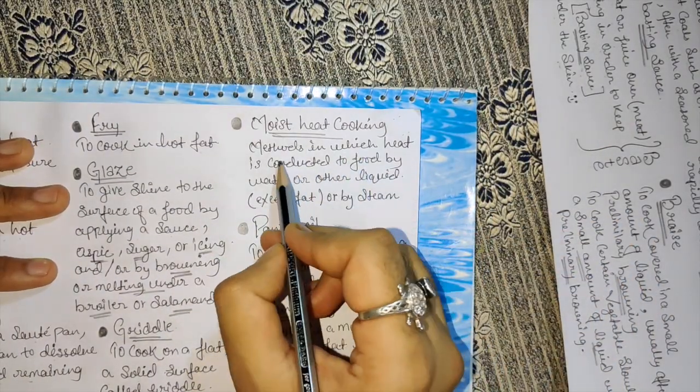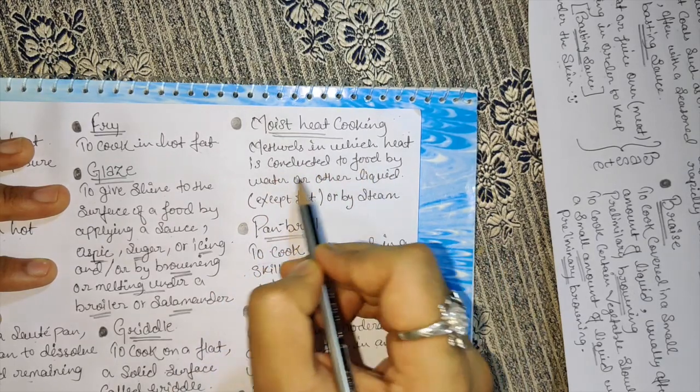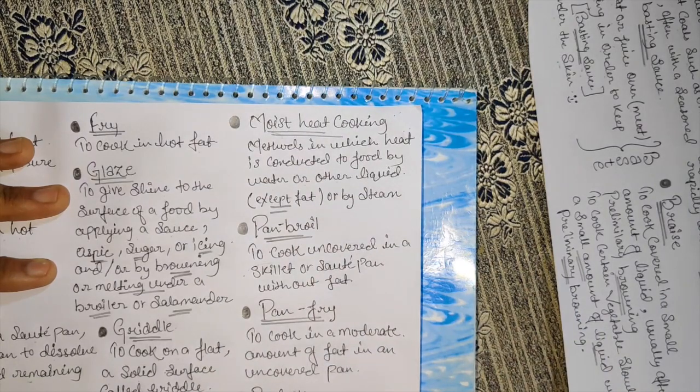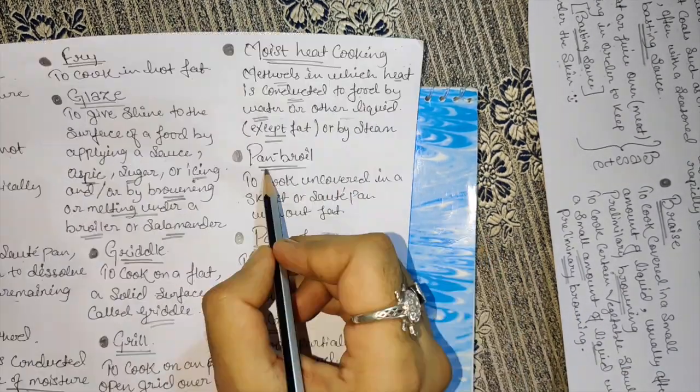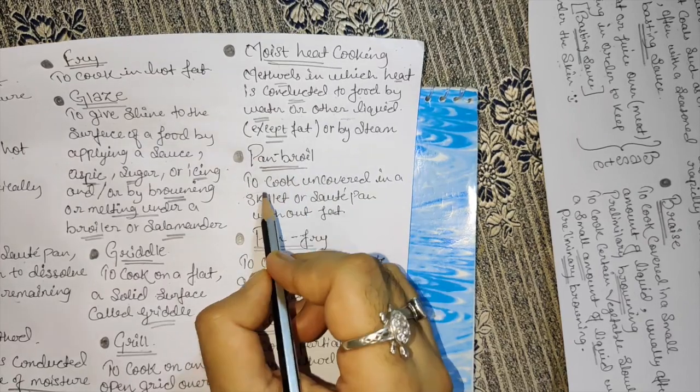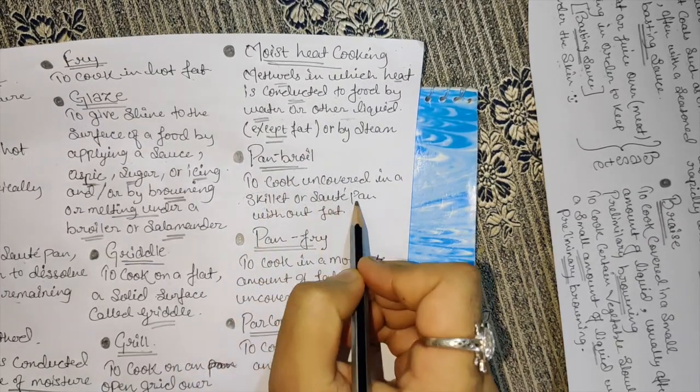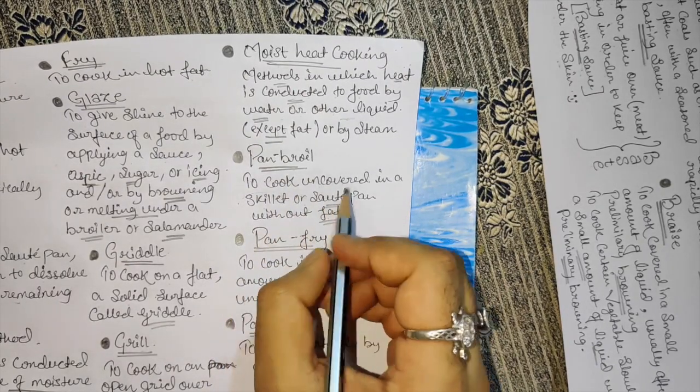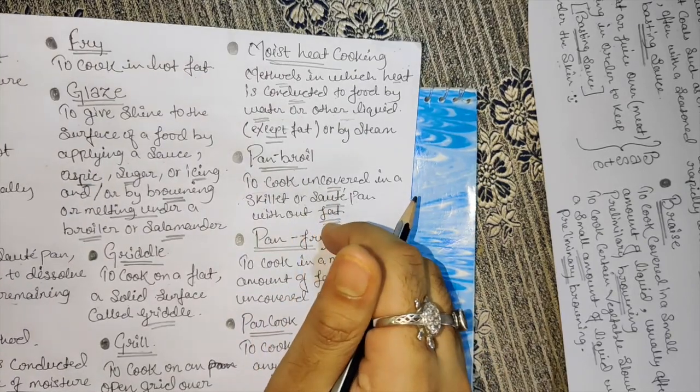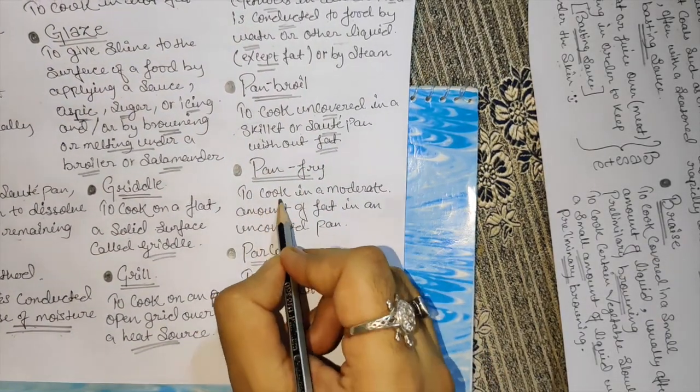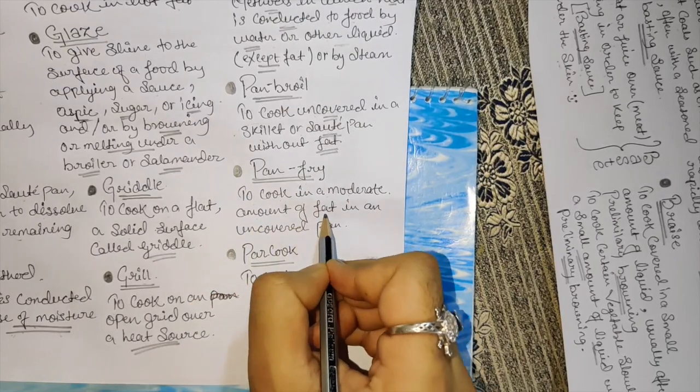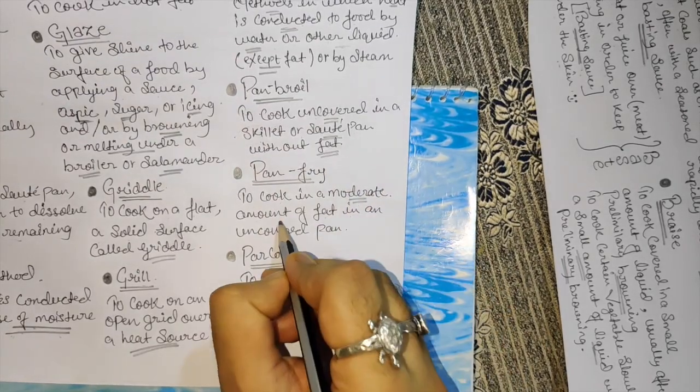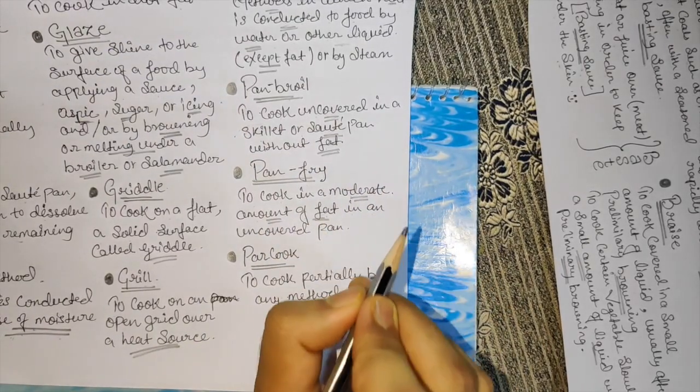Moist heat cooking - method in which heat is conducted to food by water or other liquid except fat, or by steam. Pan broiling - to cook uncovered in a skillet or sauté pan without fat. Pan fry - to cook in moderate amount of fat in an uncovered pan.